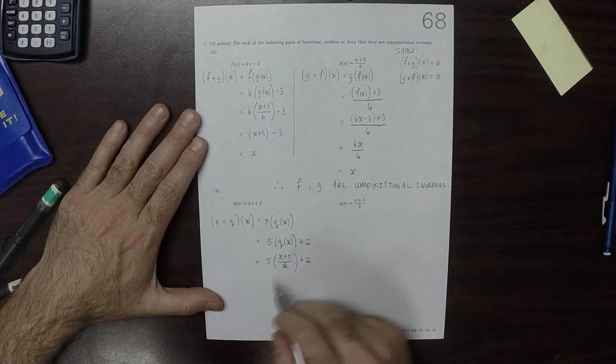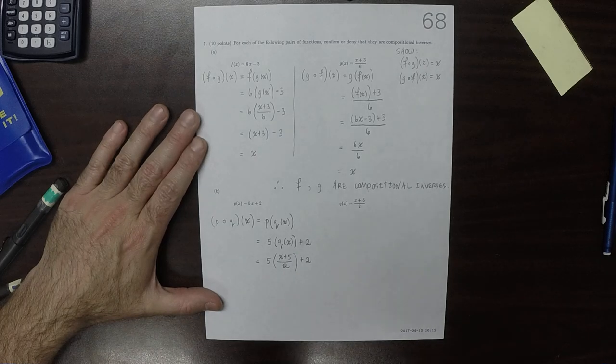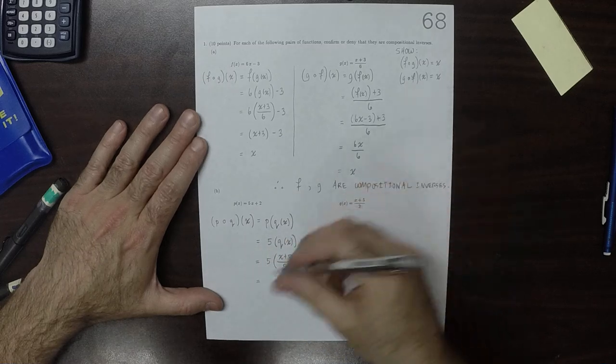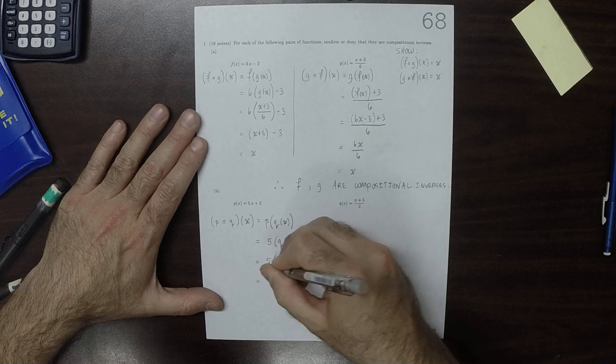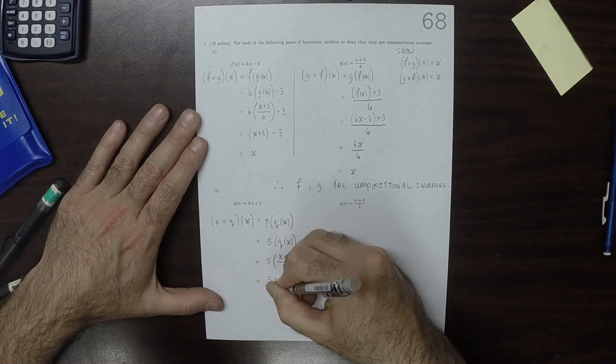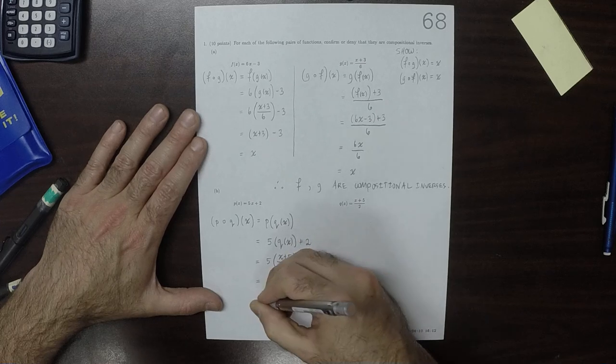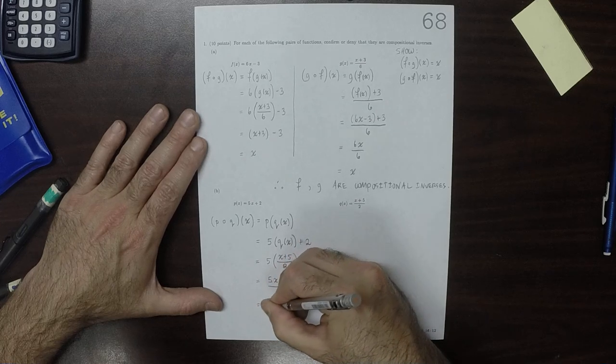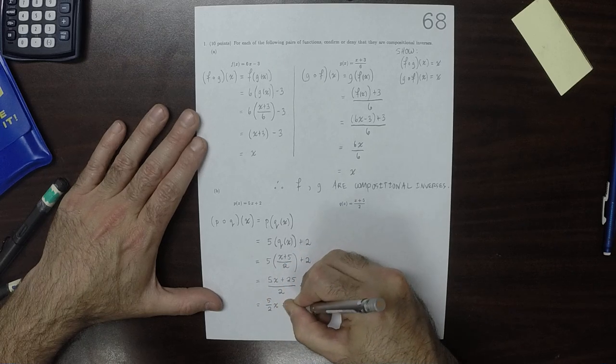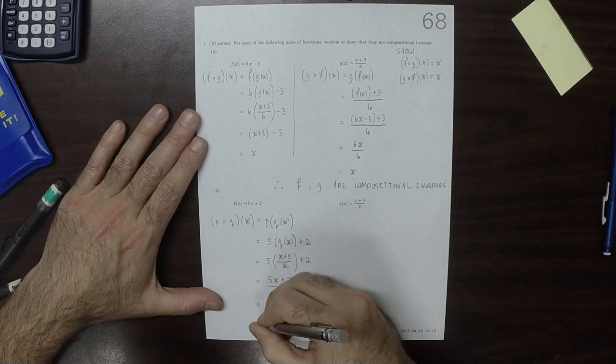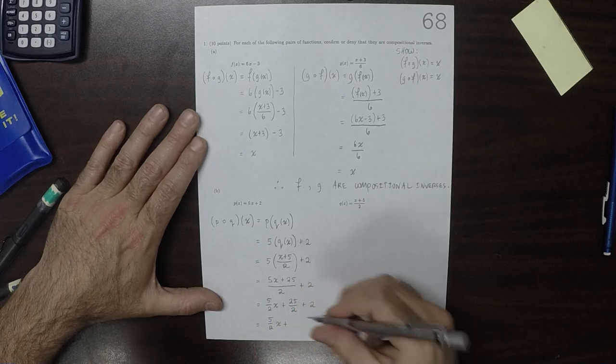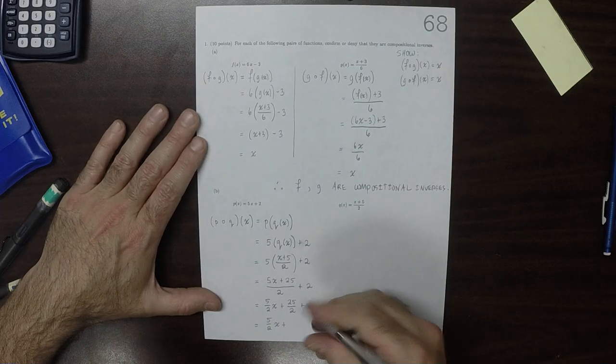So now, notice that we don't have nice cancellation. Rather, the simplest that this can get is something like distributing in that 5, 5x plus 25 over 2 and then plus 2. So that would be 5 halves x plus 25 over 2 plus 2, which is 5 halves x plus 25 halves plus 4 halves is 29 halves.